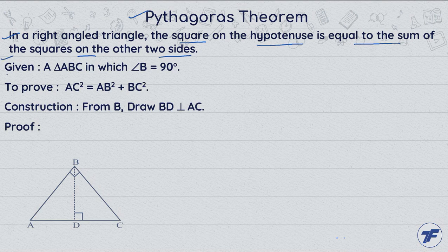First of all, we always write down: Given, a triangle ABC in which angle B is equal to 90 degrees.